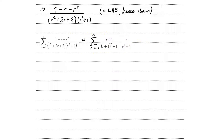For the method of differences: when r equals 1, substituting gives 2 over (1+1)² + 1 which is 2 over 5, then minus 1 over 1 squared plus 1 which is 1 over 2. So the r equals 1 term is 2/5 minus 1/2.